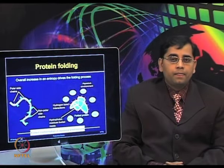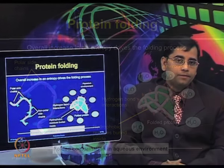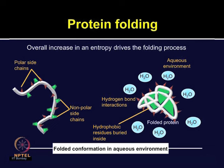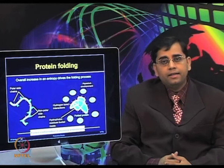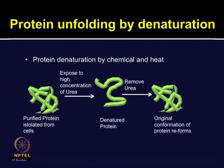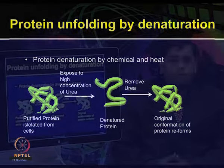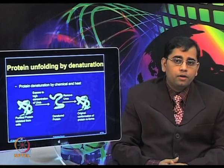Continuing on protein folding, the hydrophobic amino acids are driven to associate through hydrophobic collapse. When these amino acids come together, the loss of water surrounding these amino acids increases the entropy of the system. Therefore, an overall increase in entropy drives the folding process. As seen in the classical experiment of Anfinsen, protein unfolding can be done using denaturants — whether chemical like urea and guanidinium chloride, or by heat treatment.